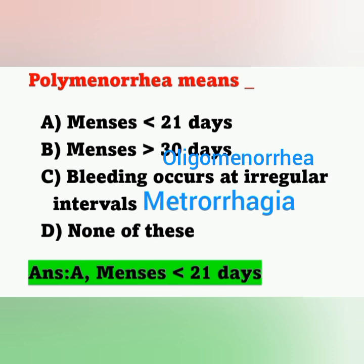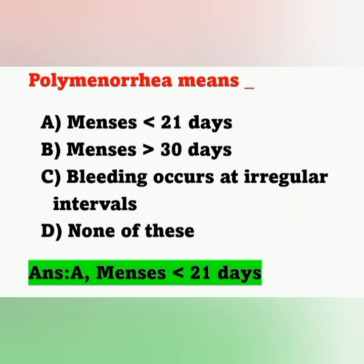Option B, menses greater than 30 days — that is 30, 40 days or greater — is known as oligomenorrhea, meaning infrequent intervals of menses. Option C, bleeding occurs at irregular intervals, is known as metrorrhagia.